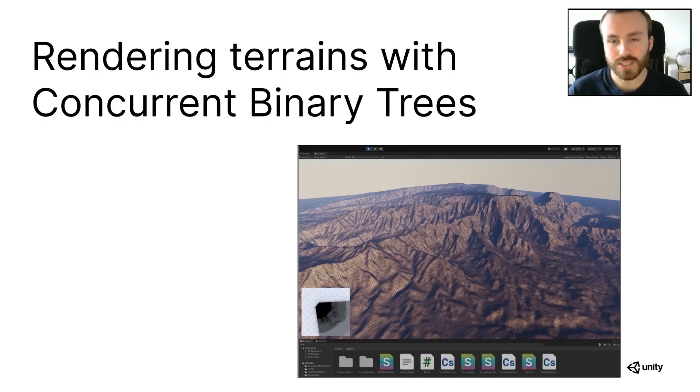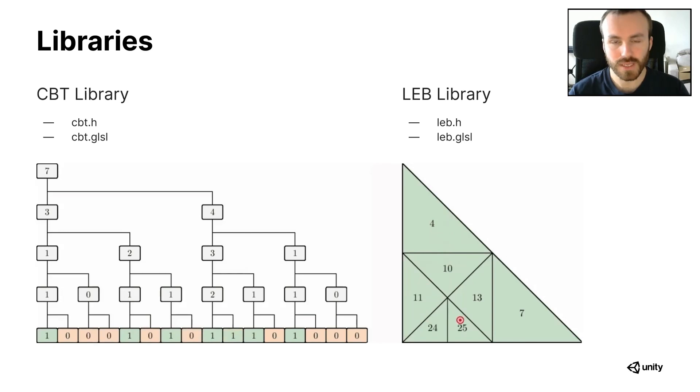So while Jonathan was working on his paper, he asked me to work on implementing his code in Unity to accompany the paper with a practical video and demo. So what does it take to do this? Well there's a couple systems to implement. The first step is importing the two function libraries that Jonathan provides with the paper, the cbt library, and the leb library. They are single file libraries with both a CPU and a GPU version.